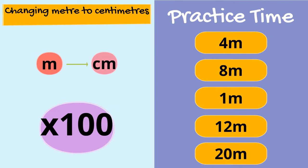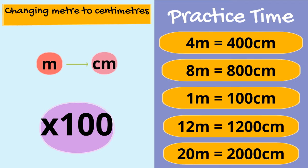OK, time for you to practice changing some meters into centimeters. I'm going to leave these on the screen to help you with these conversions. When you're ready pause the video and convert all of these meters into centimeters by using the rule multiply by 100. Off you go. Let's see how you got on. These are the answers that you should have got.